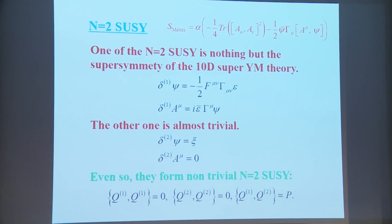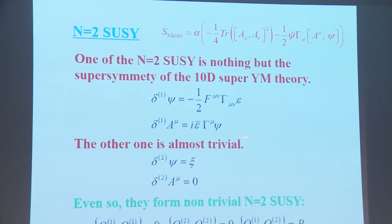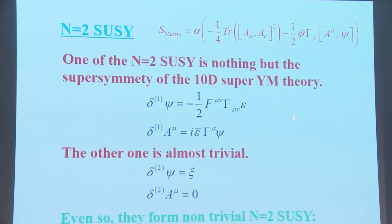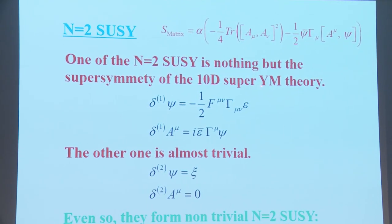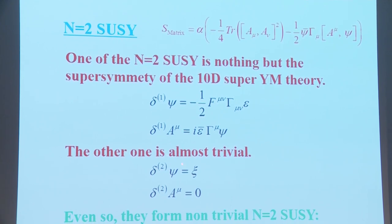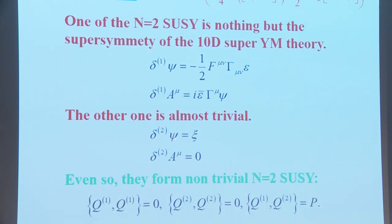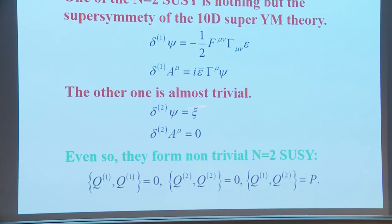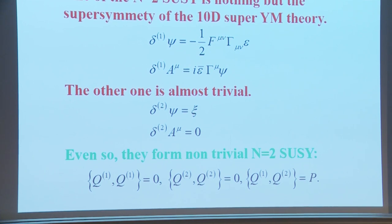The N=2 supersymmetry can be written explicitly. The first transformation is nothing but 10-dimensional super Yang-Mills reduced to zero dimensions, and the other is almost trivial — just a shift of ψ. Even so, together they form non-trivial N=2 supersymmetry.